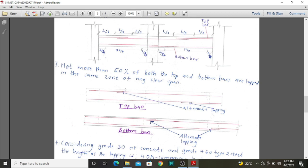Therefore, we are not supposed to lap them in the same region so that we avoid having an area of weakness in our beam, one region of weakness in our beam.